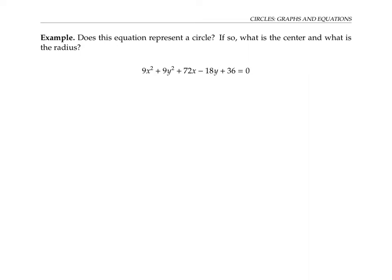So we want to transform it to look like something of the form x minus h squared plus y minus k squared equals r squared. First, I'd like to get rid of the coefficients in front of the x squared and the y squared, so I'm going to divide both sides by nine. This gives me x squared plus y squared plus eight x minus two y plus four equals zero. Next, I'm going to group the x terms together, the x squared and the eight x, and I'll group the y terms together, the y squared and the minus two y, and I'm going to subtract over the four to the other side.